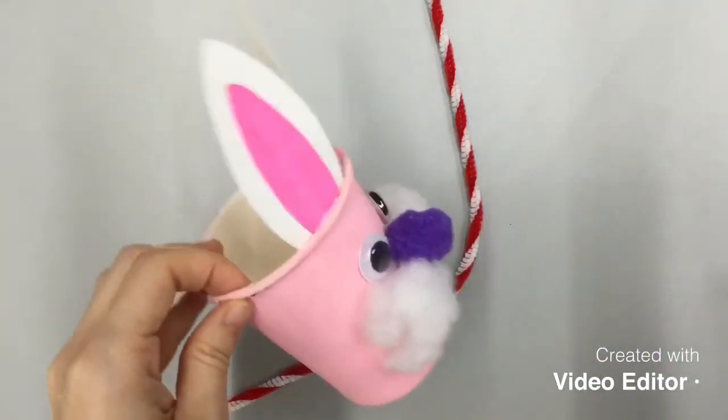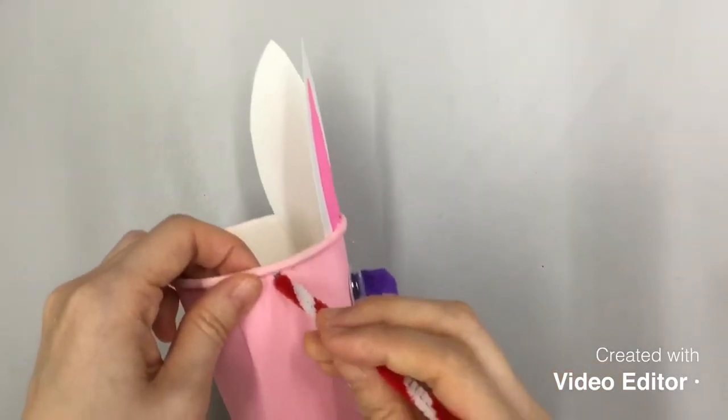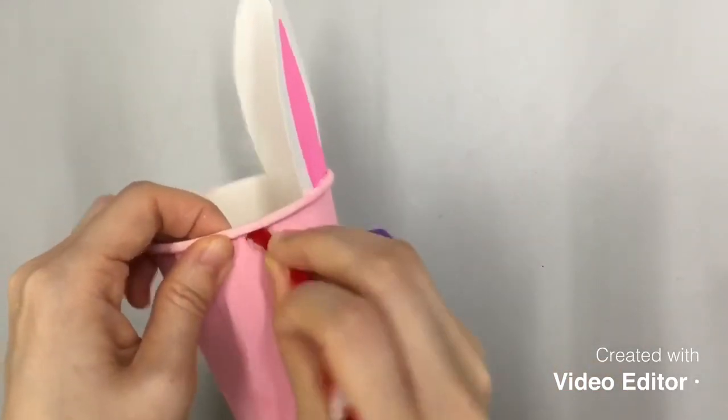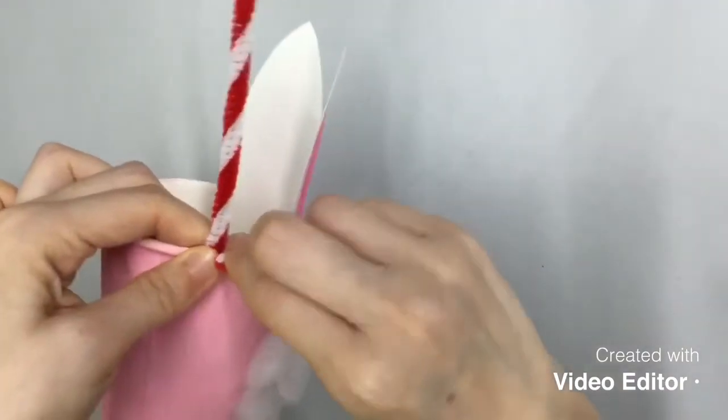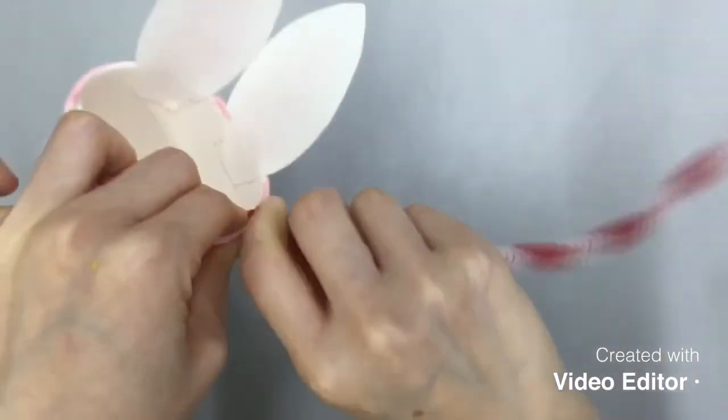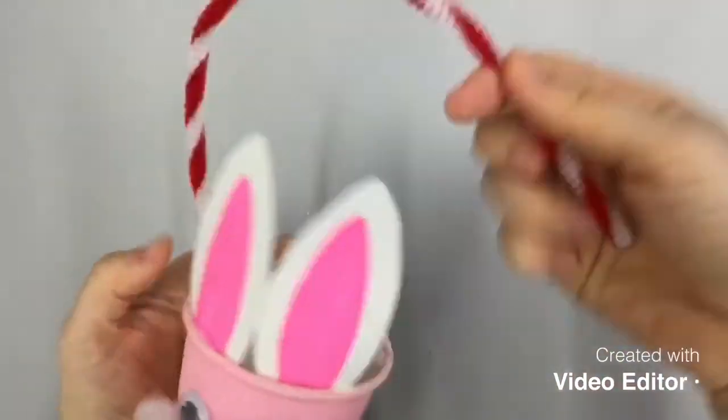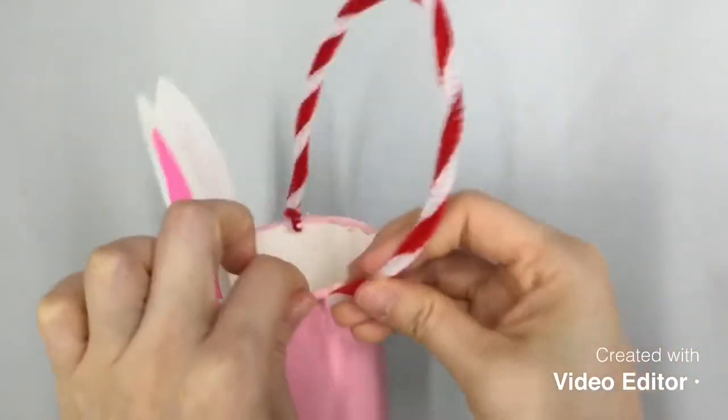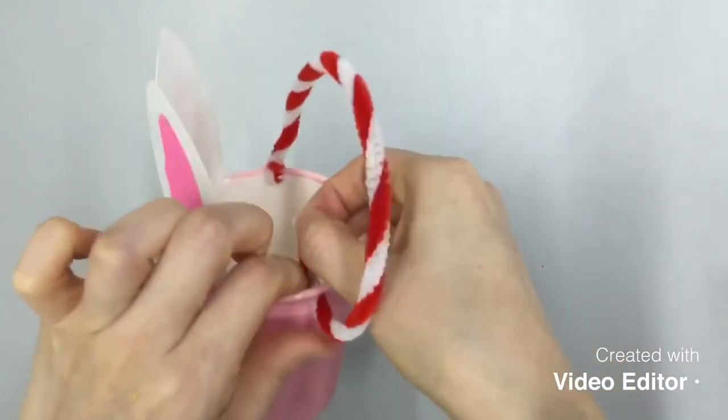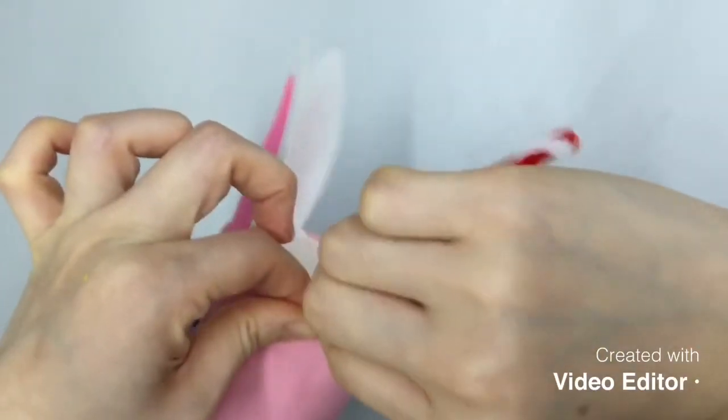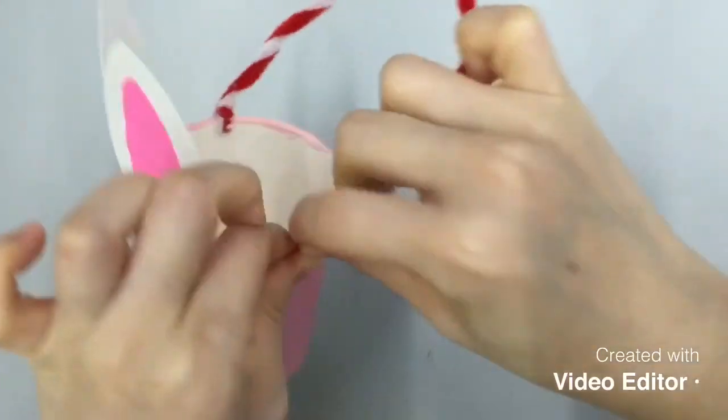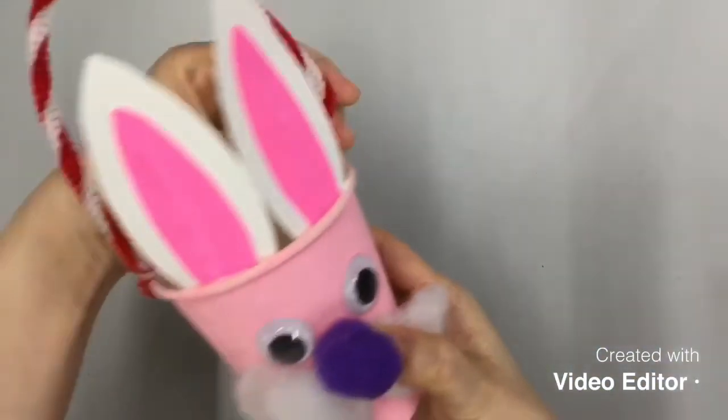Now you take your pipe cleaner to push it through the hole from the outside. You gotta be careful when you're handling the pipe cleaner because it's really sharp at the end. And twist it to close and secure it. Same for the other side. Through the hole it goes. And twist to secure it. And now let's see. My bunny basket is finally completed.